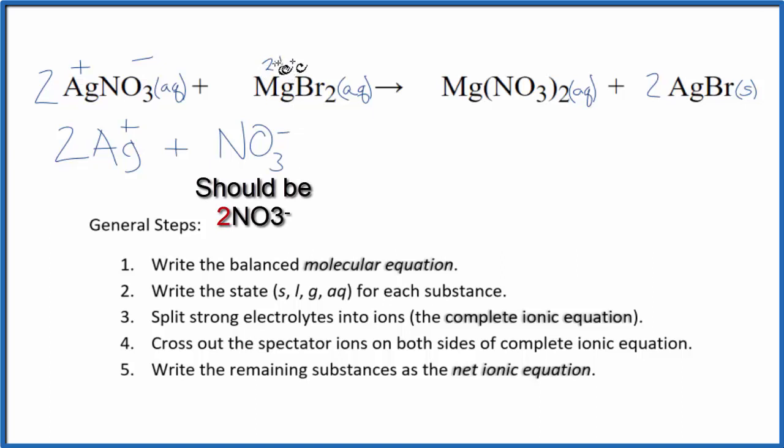Magnesium is group two, two plus. Bromine, that is a one minus. So we're going to have Mg2 plus.